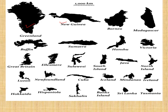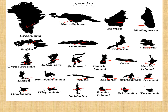To summarize the list: Greenland, New Guinea, Borneo, Madagascar, Baffin Island, Sumatra, Honshu, Victoria, Great Britain, Ellesmere, Sulawesi, South Island, Java, North Island, Luzon, Newfoundland, Cuba, Iceland, Mindanao, Ireland, Hokkaido, Hispaniola, Sakhalin, Banks Island, Sri Lanka, and Tasmania. Tasmania lies to the south of Australia.